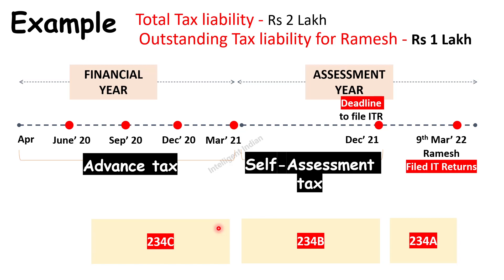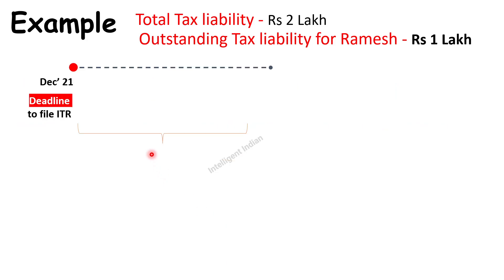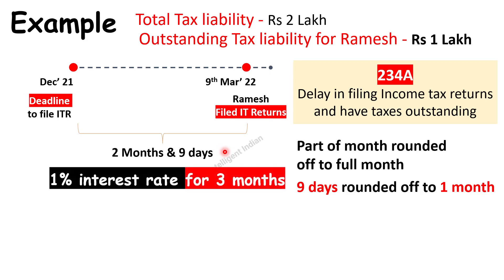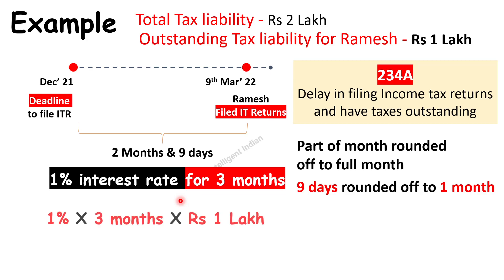Let us now calculate interest under each section. Under Section 234A, the time window is between the deadline to file ITR and the actual filing date — that is from 31st December 2021 to 9th March 2022, which is 2 months and 9 days. The income tax department rounds any part of a month up to a full month, so 2 months and 9 days becomes 3 months. The interest rate is 1% per month, so: 1% × 3 months × Rs 1 lakh outstanding = Rs 3,000. That is Section 234A.